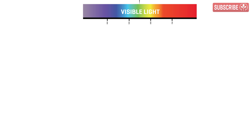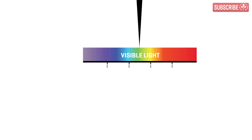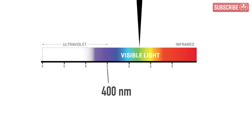I mention PAR because it sets the stage for UV. As the name suggests, UV means beyond violet. It's radiant energy below 400 nanometers and above 100 nanometers.